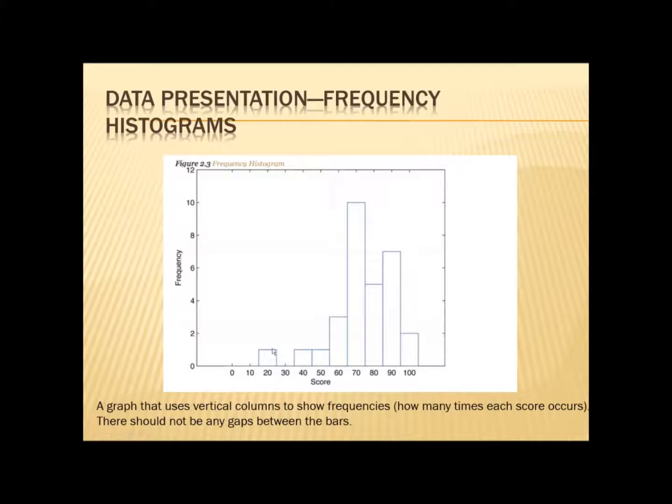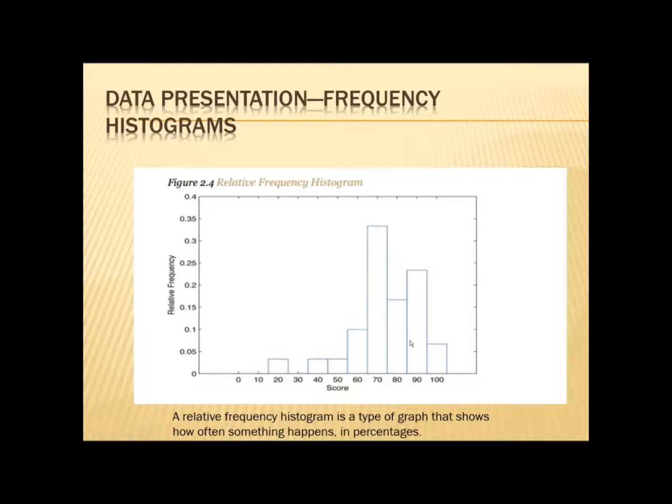It tells you that 10 people got in the 70s, one person got in the 20s, nobody in the 30s, one in the 40s, one in the 50s. Three people in the 60s, several people in the 70s and 80s, and two people in the 100s. This is a relative frequency histogram which works slightly differently.